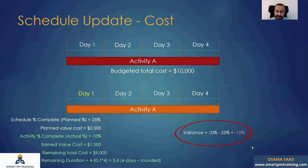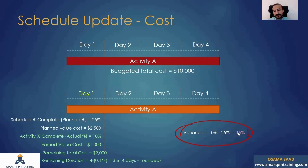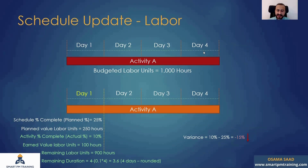The variance here is actual percentage minus planned percentage: 10% minus 25% equals negative 15%. Of course, we know it's in delay — I did only 10% while I was supposed to have 25%, so the variance is negative 15%.